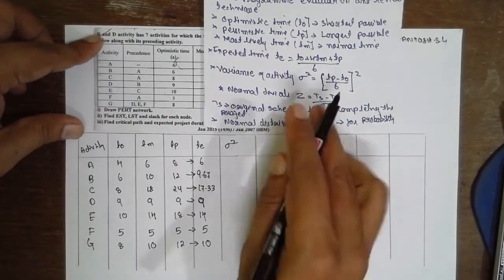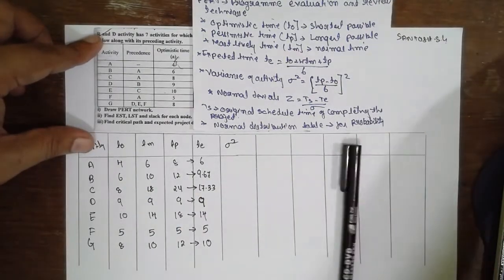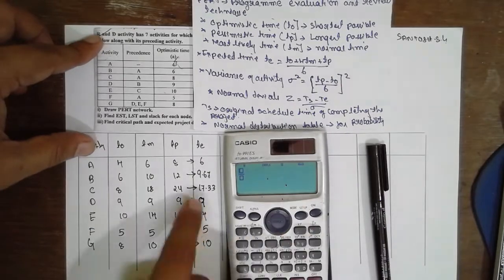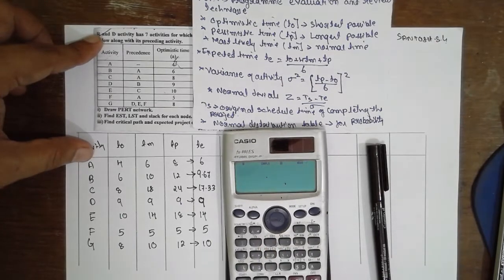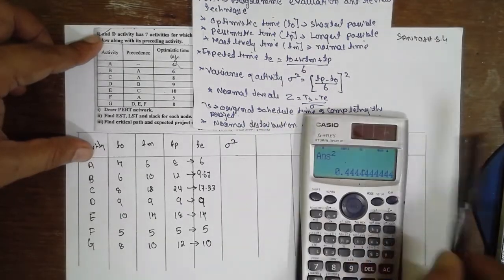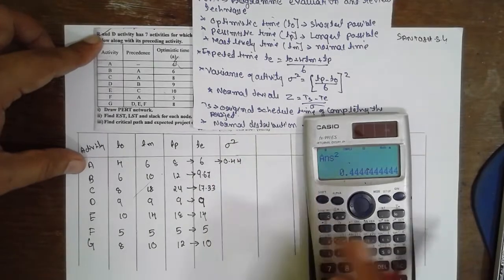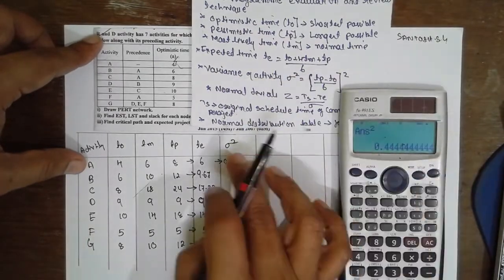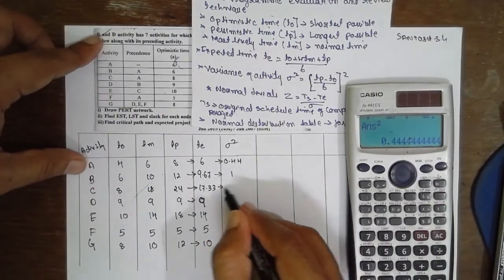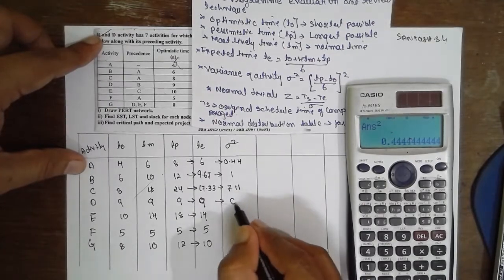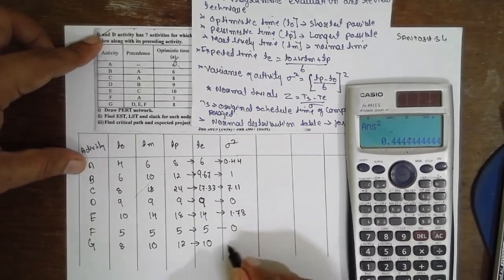Now for sigma-square, the formula is: σ² = ((Tp − To)/6)². For A: (8−4)/6 squared = 0.44. Do not transfer the square — we require the squared value. Following the same procedure: A=0.44, B=1, C=7.11, D=0, E=1.78, F=0, G=0.44.